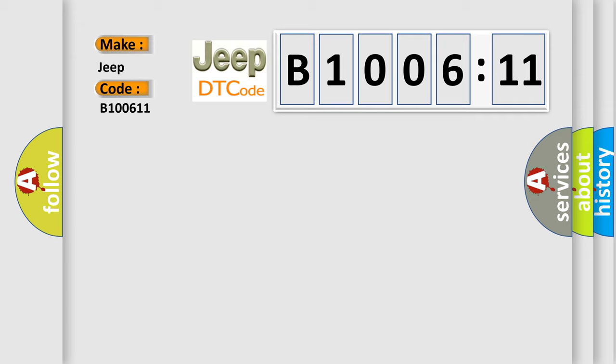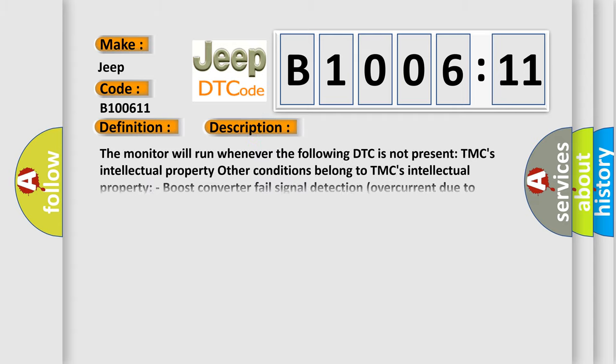The basic definition is DC to DC converter performance. And now this is a short description of this DTC code. The monitor will run whenever the following DTC is not present. Other conditions belong to TMC's intellectual property. Boost converter fail signal detection, overcurrent due to hybrid vehicle transaxle assembly malfunction.